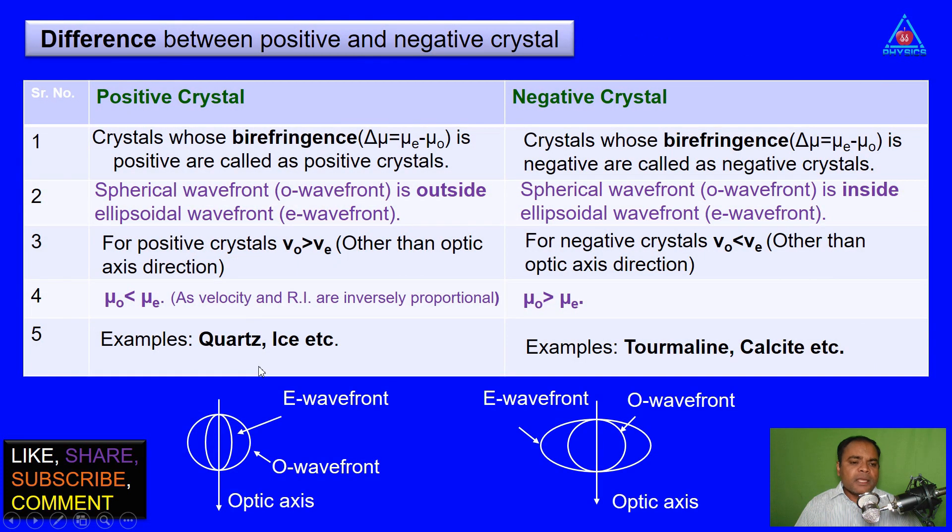One more thing. Example. Positive crystal example is quartz. This Q is circular like this circular figure of positive crystal. And here tourmaline crystal, T, on top of T there is a dash like negative sign like a negative crystal. So in this way using these tricks you can remember these examples.